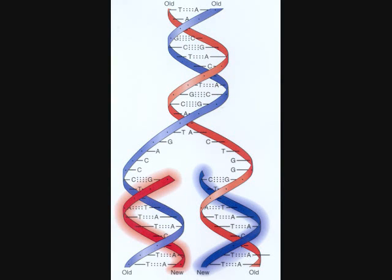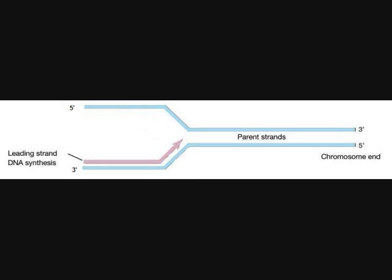To allow the replication of DNA, the double helix must be unraveled by an enzyme. Then, polymerase, another enzyme, moves along one of the strands, called the leading strand, in the direction 3 to 5 and assembles a complementary DNA strand as it goes along.